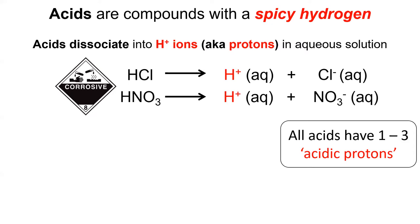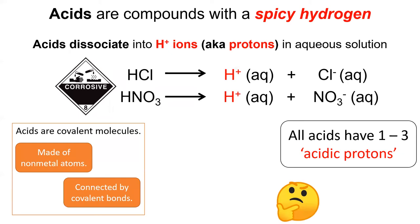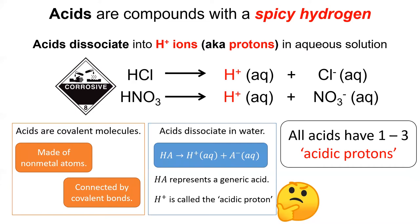An acid can have more than one spicy hydrogen, which we would refer to as acidic protons. Now, this dissociation makes acids kind of strange. On one hand, acids are made of non-metal atoms which are covalently bonded to one another. But on the other hand, the covalent bonds to the hydrogen atom is often broken, causing the acid to dissociate into ions. This puts acids somewhere in between purely ionic and purely covalent substances.